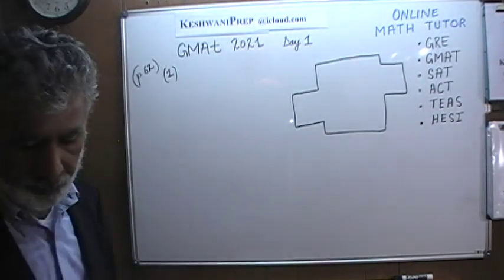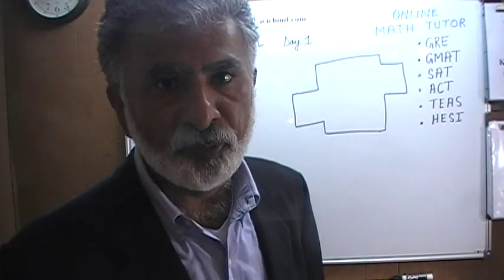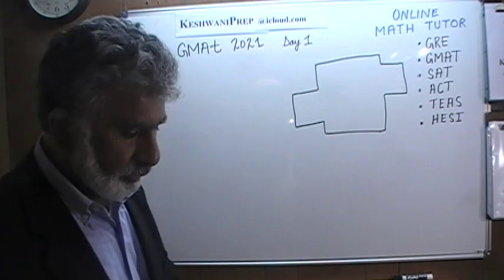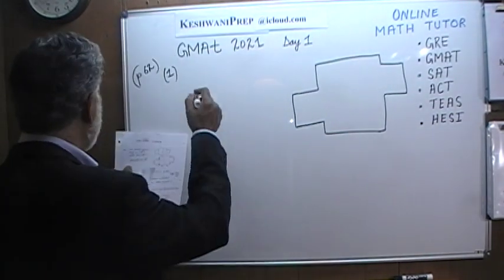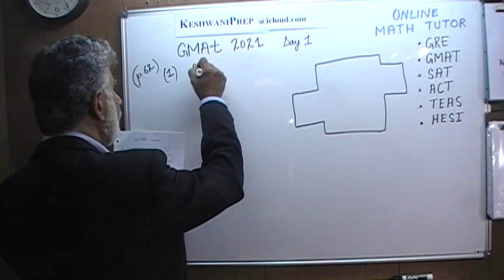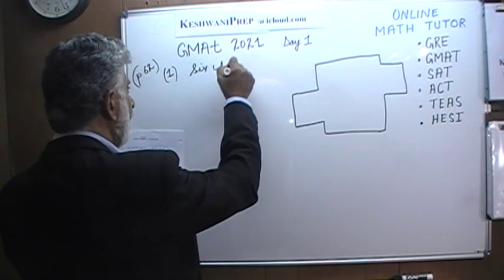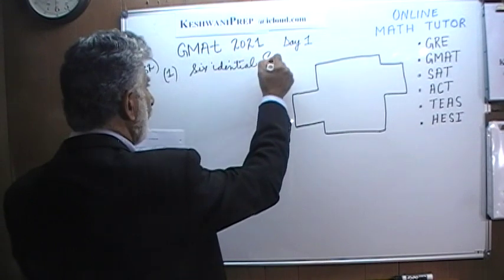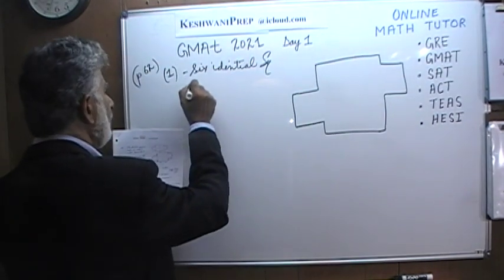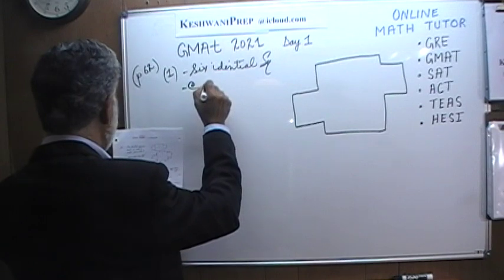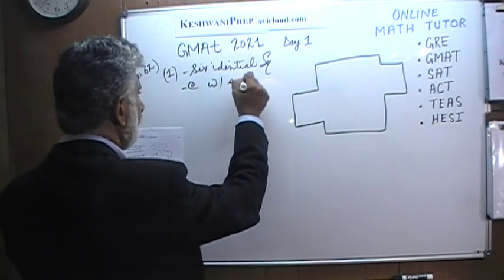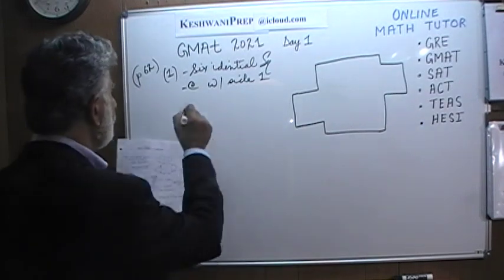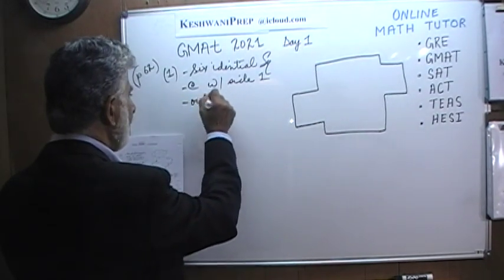So we have a picture here — it's not drawn very nicely, which is why you have the book in front of you. The book tells us that we have six identical squares, each with side equal to one.